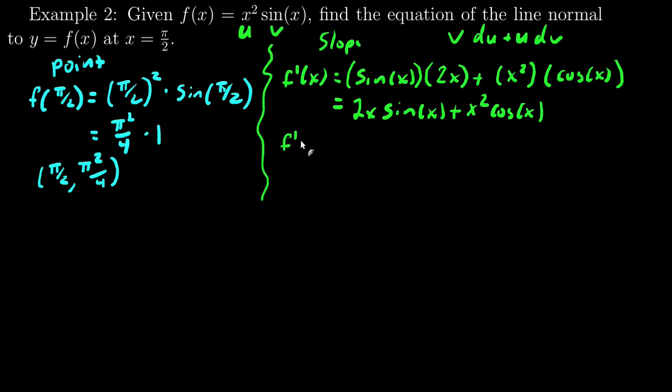And, now, I want to find f'(π/2) to find the tangent slope. So, I'll have 2 times π/2 times the sine of π/2 plus (π/2)^2 times the cosine of π/2.